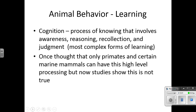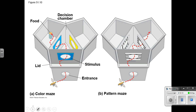Cognition is the process of knowing that involves awareness, reasoning, recollection, and judgment — it's the most complex form of learning. It was once thought that only primates and certain marine mammals could have this high level of processing, but studies are showing that's not true. In a color maze experiment, bees were trained to choose the same color and were rewarded. They were then tested using a pattern maze, and most bees trained with the color maze actually applied the same-pattern logic to the pattern maze — choosing the door with the matching pattern.